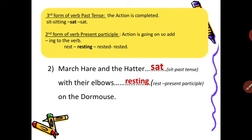Second form of verb — present participle, so the action is going on. Add -ing to the verb. Rest — resting — rested — rested. But present participle form contains -ing, so it will come: resting.